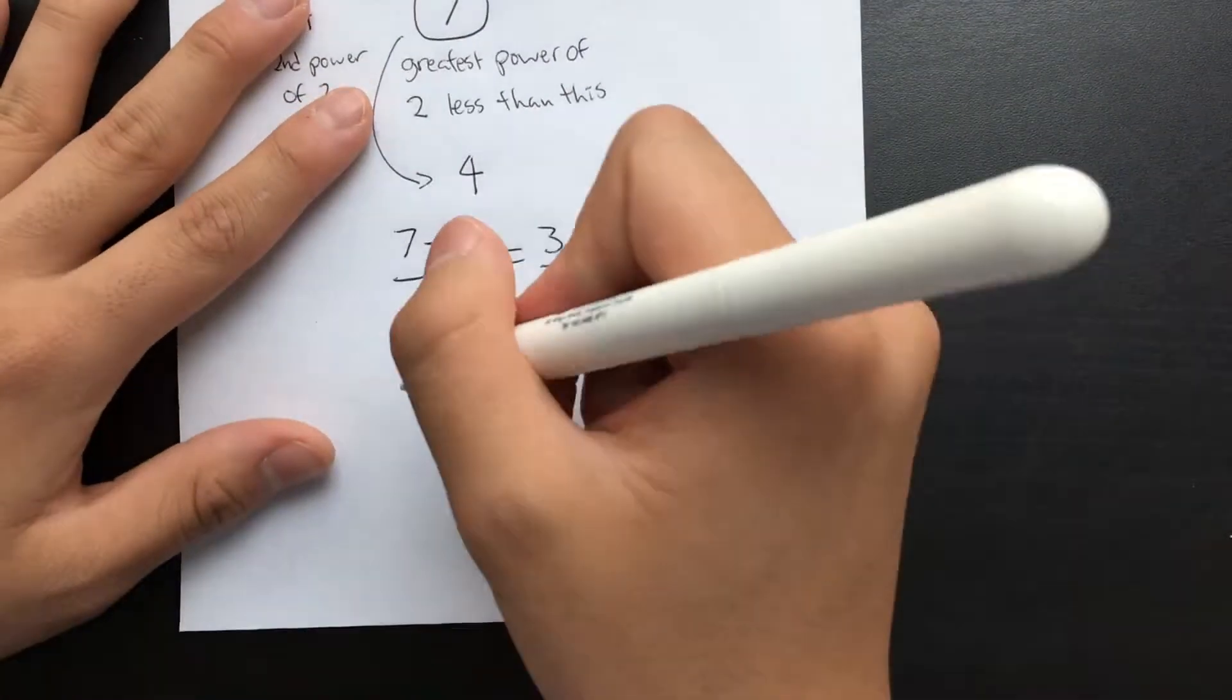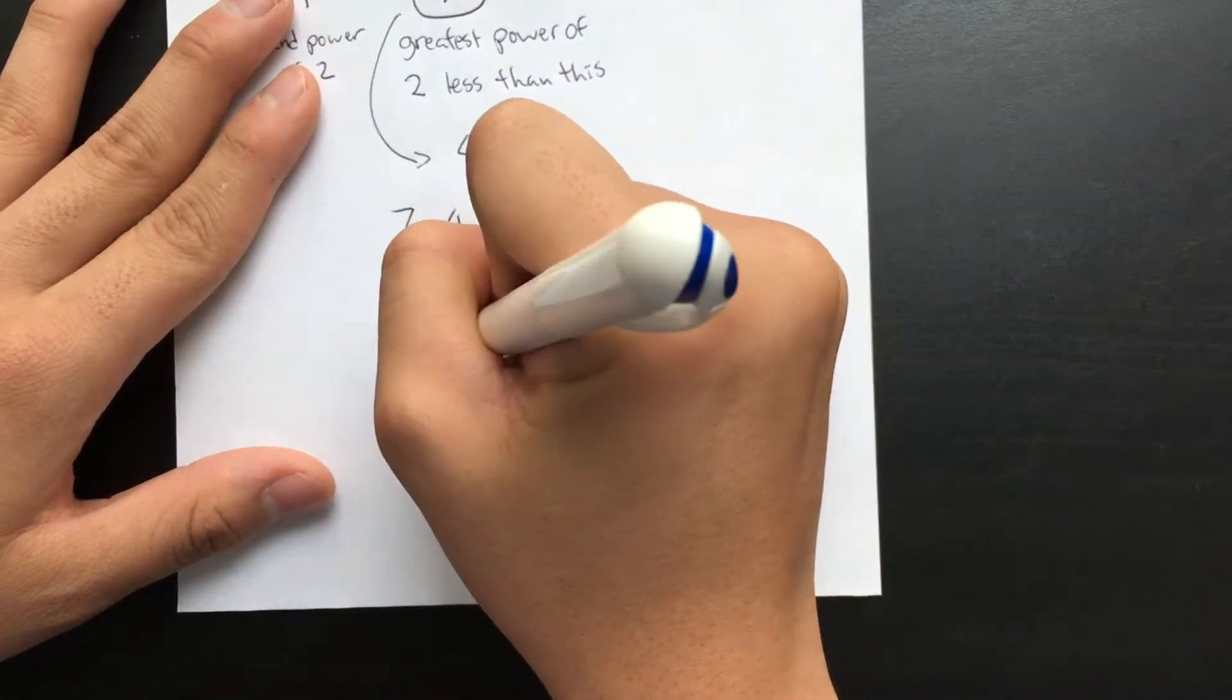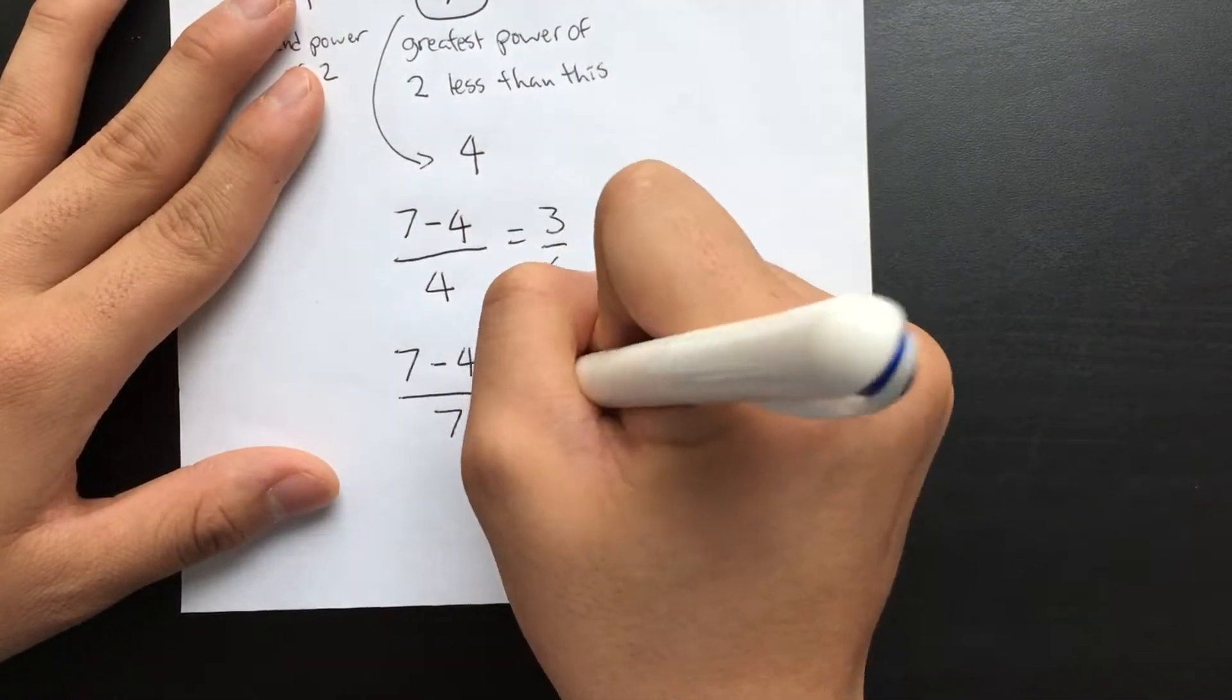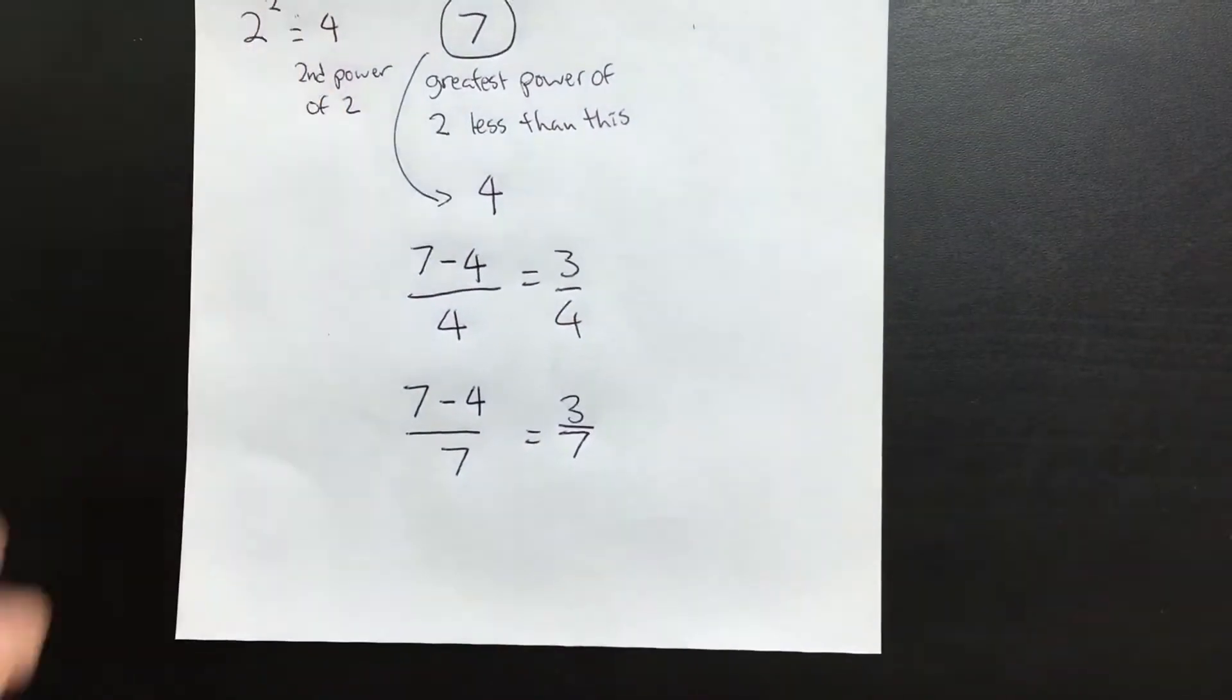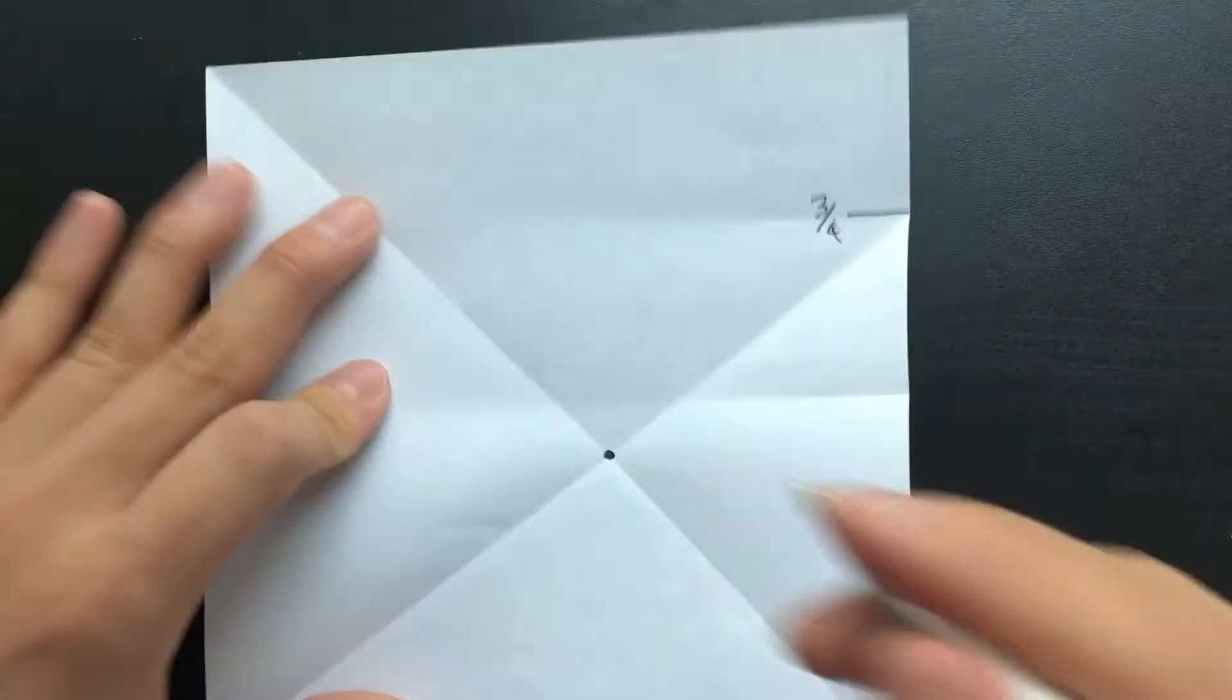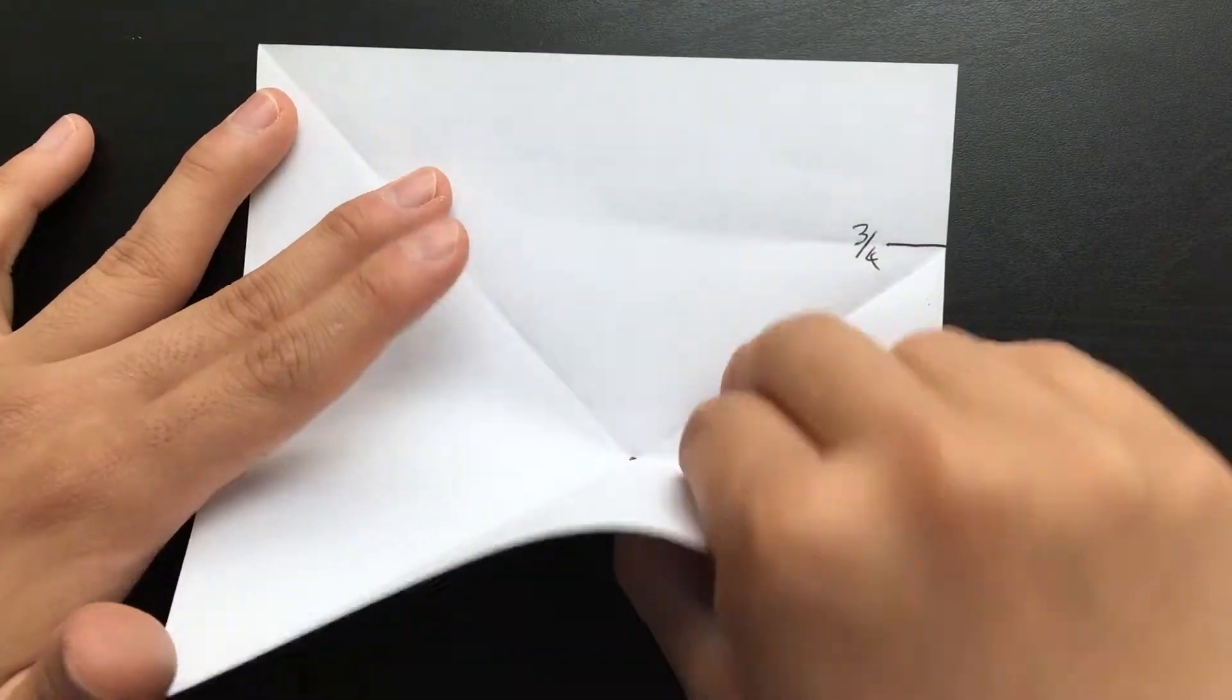To find out what's special about this point, take the number of segments you divided into, 7, minus your power of 2, and divide it by your number of segments. In this case, 7 minus 4 over 7 is 3 sevenths. The point where those two lines intersected is 3 sevenths of the way up from the bottom.